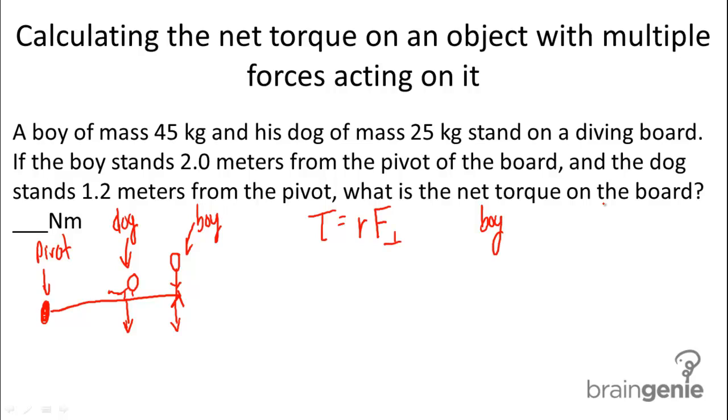Let's go ahead and solve this for the boy first. It's pretty simple. The only force that he's applying to the diving board is caused by the force of gravity pulling down on the boy, thus creating a contact force between the boy and the diving board. So the perpendicular force is going to be equal to mg, which equals 45 times 9.8, and that gives you a value of 441 newtons.